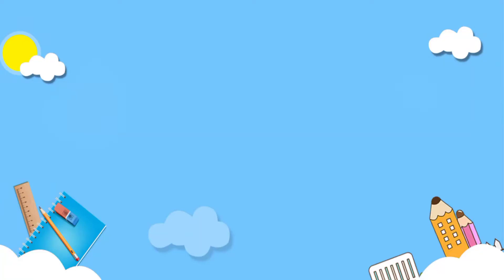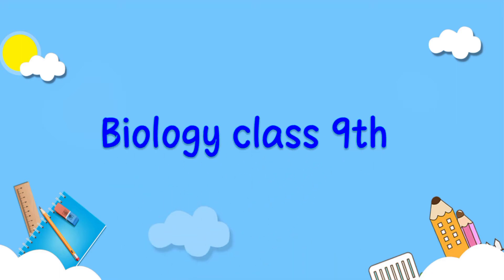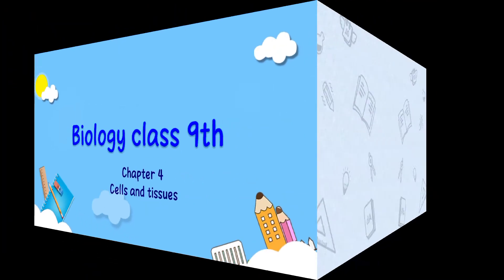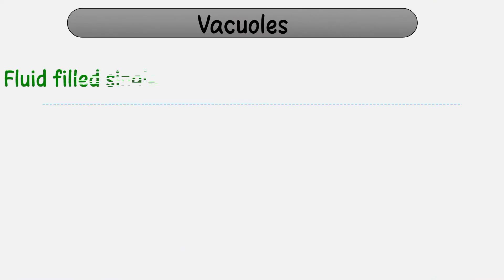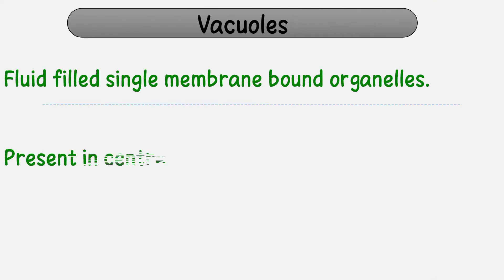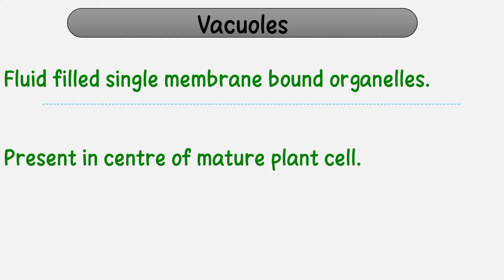Bismillahirrahmanirrahim, Assalamualaikum students, welcome to Biology Class 9, Chapter 4: Cells and Tissues. Today the topic of discussion is cell organelles — the last organelle, which is vacuoles. This is a very easy and simple organelle. The definition: a vacuole is a fluid-filled, single-membrane-bound organelle present in the center of a mature plant cell. اس vacuole کی single membrane ہوتی ہے۔